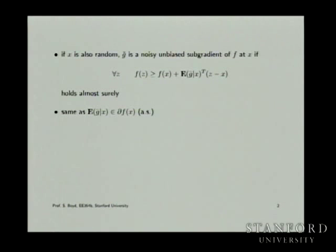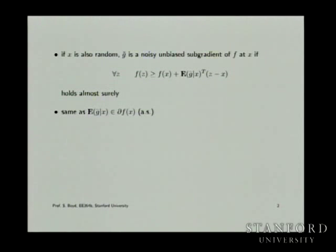This is the conditional expectation of g-tilde — the noisy subgradient — conditioned on x. That's a random variable.